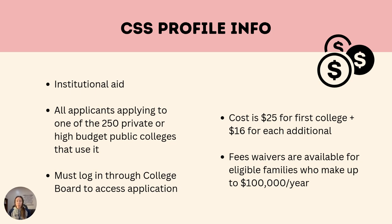The CSS Profile is unique in that only certain private and large-budget public colleges will require it. The CSS Profile is organized by College Board, so students may log into their College Board account to explore if the CSS Profile is necessary for them. The website will list the colleges requiring the application. The CSS Profile does have a fee: $25 for the first college and $16 for each additional college. The good news is that families who make up to $100,000 annually may receive fee waivers. Students and families will complete the CSS Profile in addition to the FAFSA or the California Dream Act.